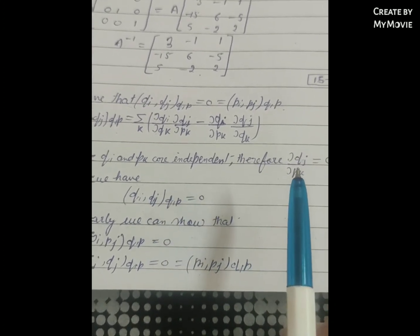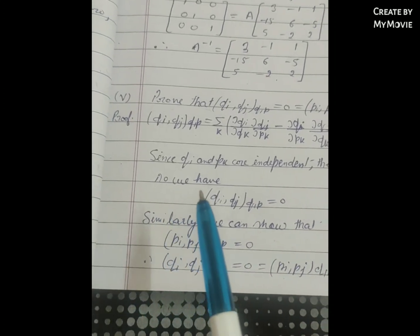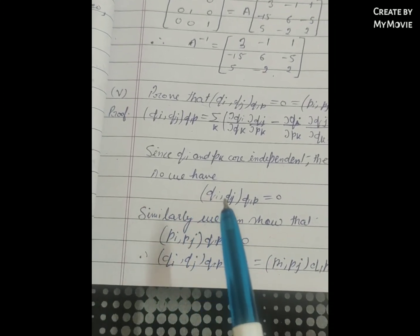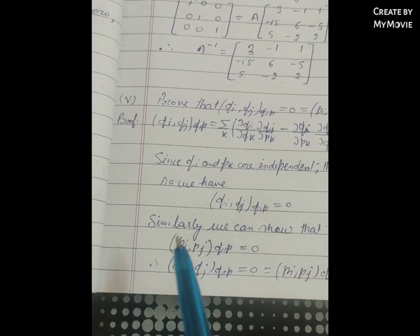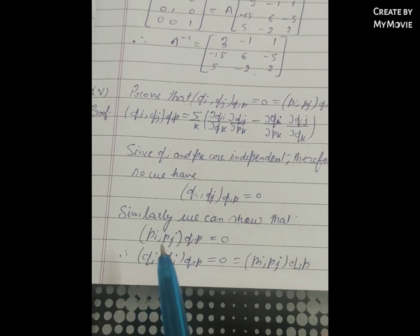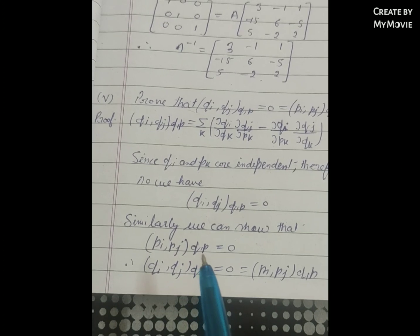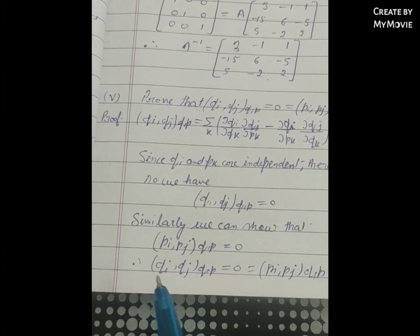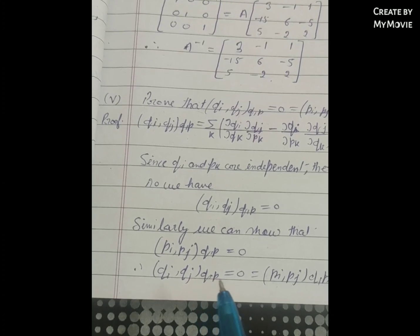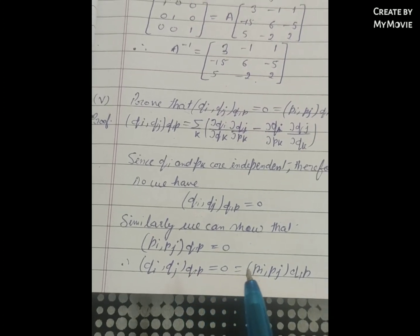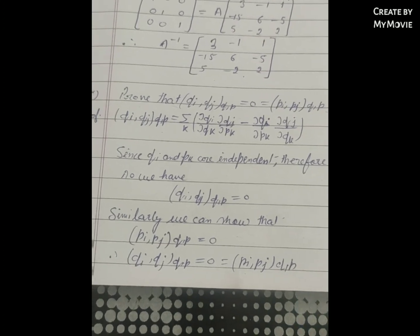Therefore ∂qj/∂pk = 0, etc. So we have (qi, qj)_{q,p} = 0. Similarly we can show that (pi, pj)_{q,p} = 0. Thus (qi, qj)_{q,p} = 0 = (pi, pj)_{q,p}.